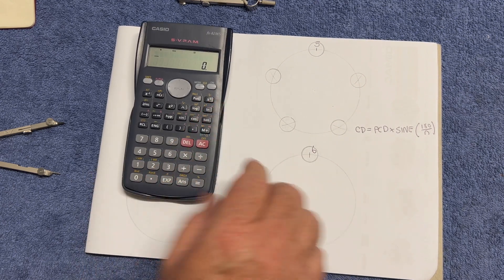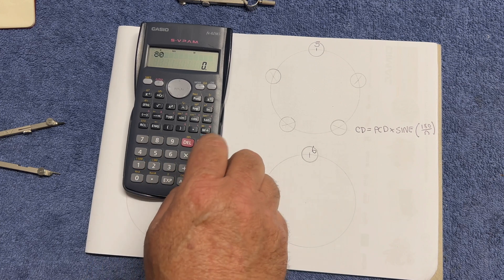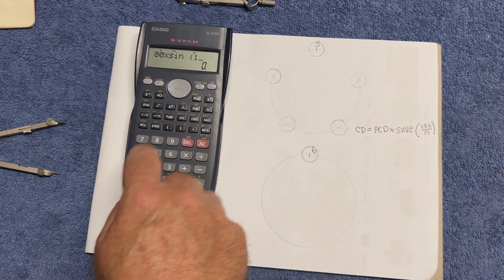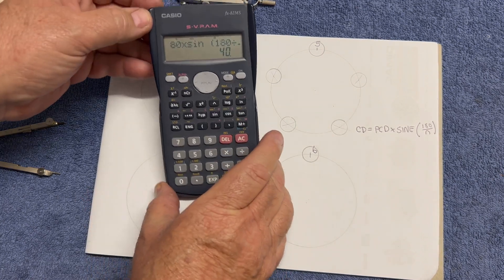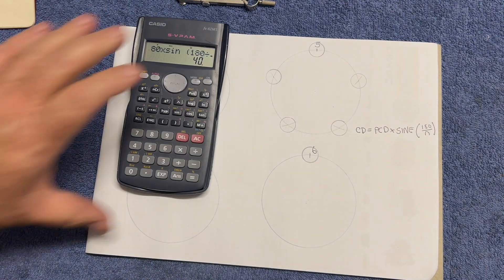Let's try six over this one here. So once again, PCD, so here it is 80 multiplied by sine, open bracket, 180 divided by six, close bracket, equals. This one here is 40 millimeters. Remember that all these diameters are in metric.